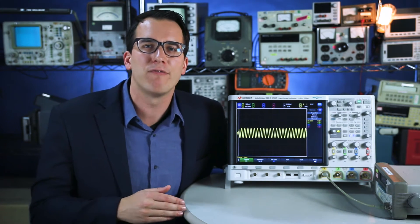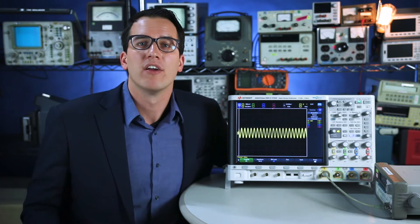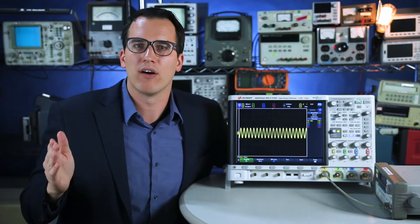Sample rate is the spec for digital scopes and it tells you how fast, how many points per second, your oscilloscope is actually acquiring data. So the signal is routed through the analog front end, which is where the bandwidth comes from. And then we have the digitizer sampling that analog waveform.